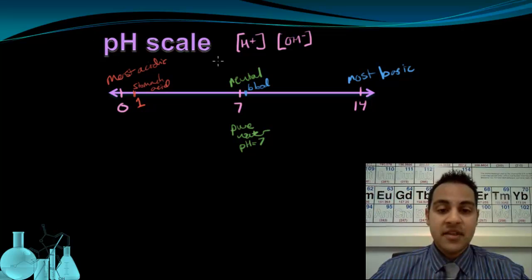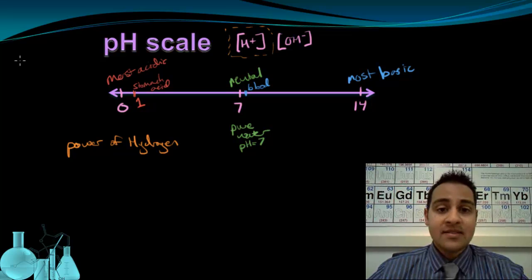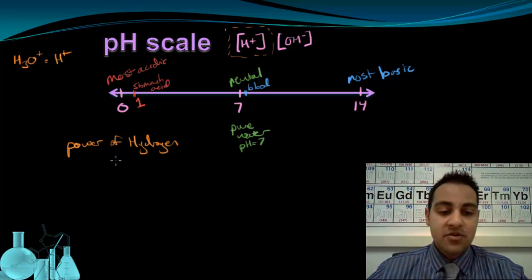And in fact, pH, that number 0 to 14, most directly relates to hydrogen. pH actually stands for the power of hydrogen. And since we know that H3O, the hydronium ion, is the same thing as referring to the hydrogen ion, H+, this is also the power of hydronium.